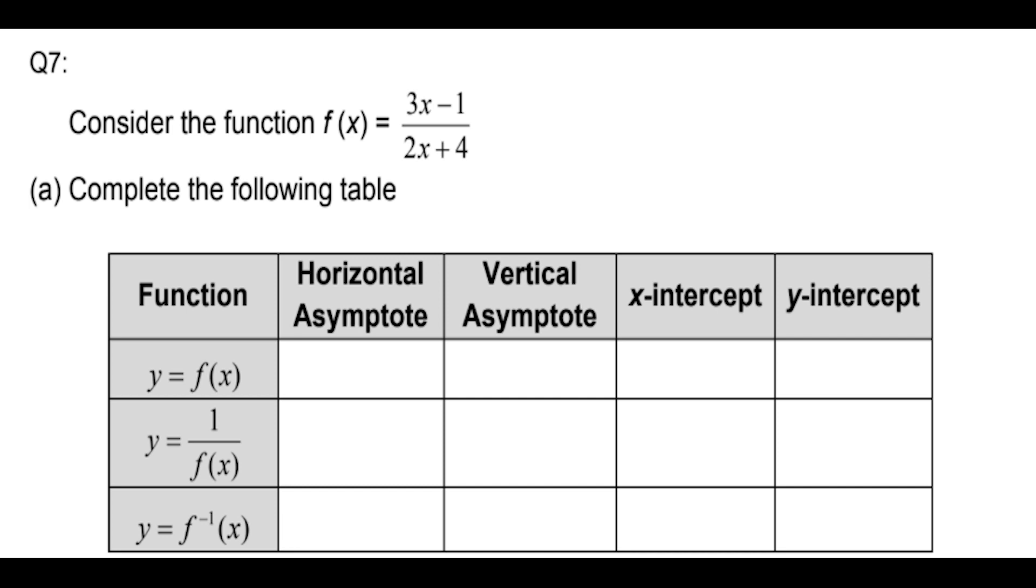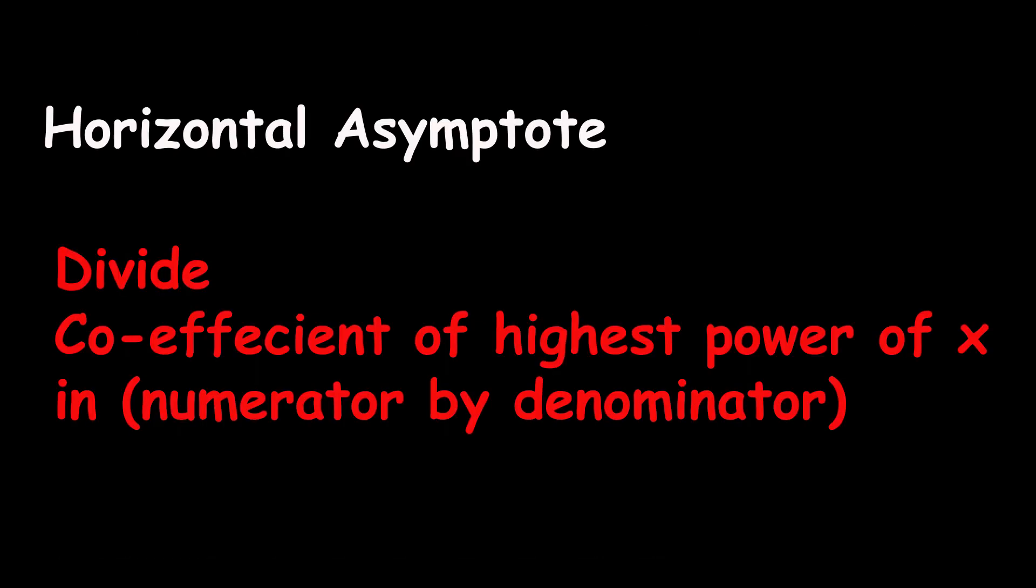We need to find the horizontal asymptote, vertical asymptote, and the x and y intercepts in this part. In the previous video, we learned that to find the horizontal asymptote, we need to divide the coefficients of the highest power of x in the numerator and denominator.